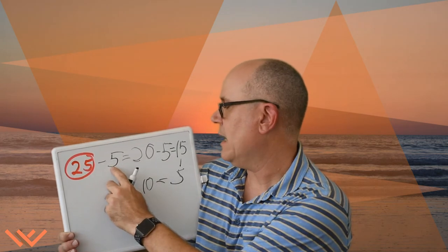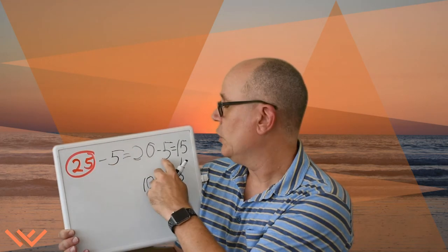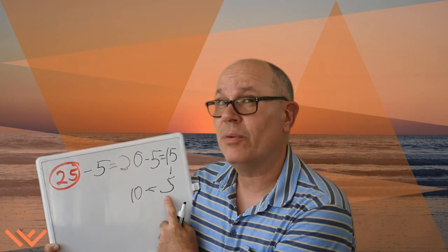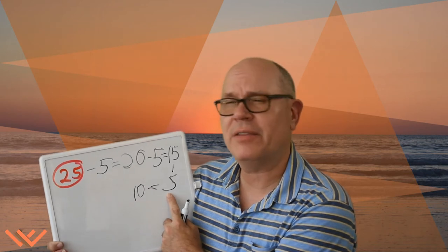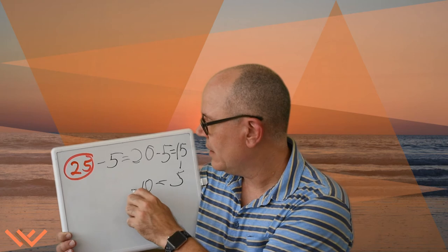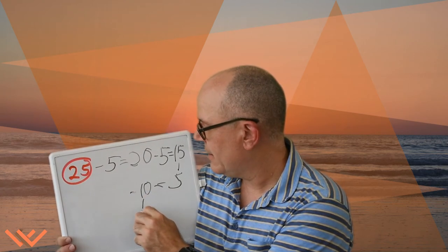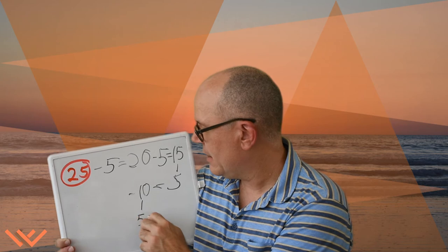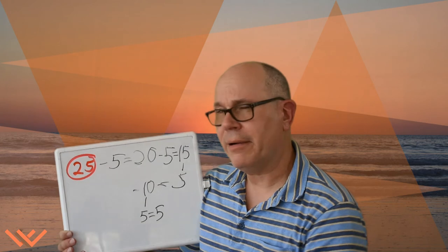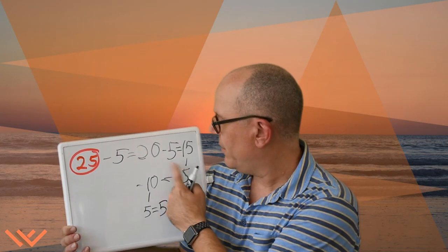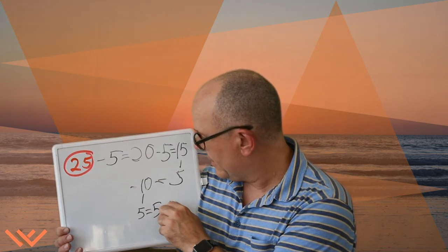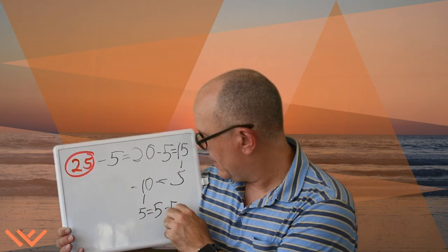So we have one cupcake each, two cupcakes each. So 15 minus 5, and that equals 10. So we have one cupcake, two cupcakes each, three cupcakes each. Can you guess how many cupcakes they're going to have? Let's keep going. So 10 minus 5, and that equals 5.